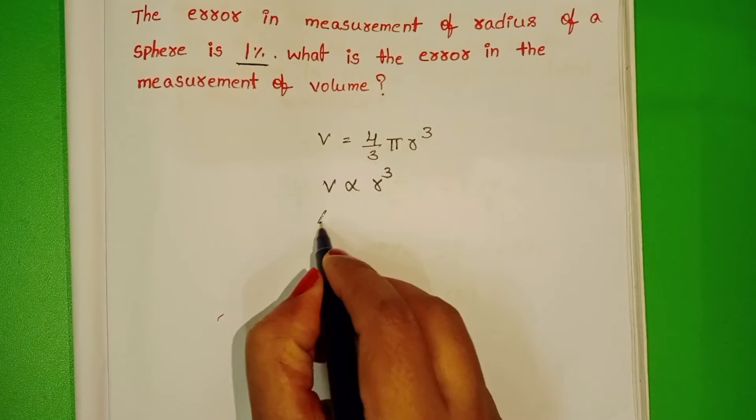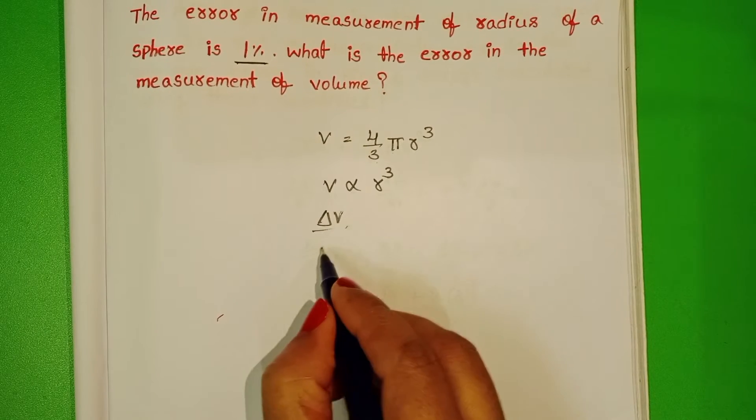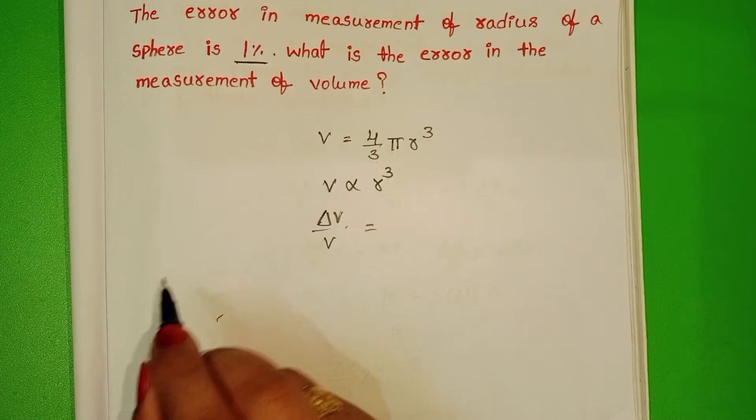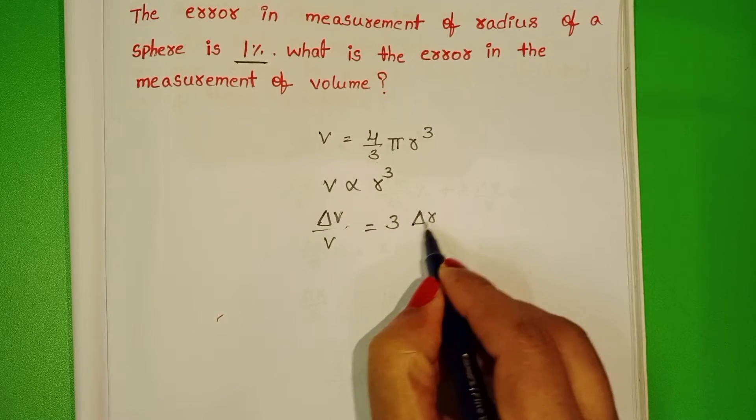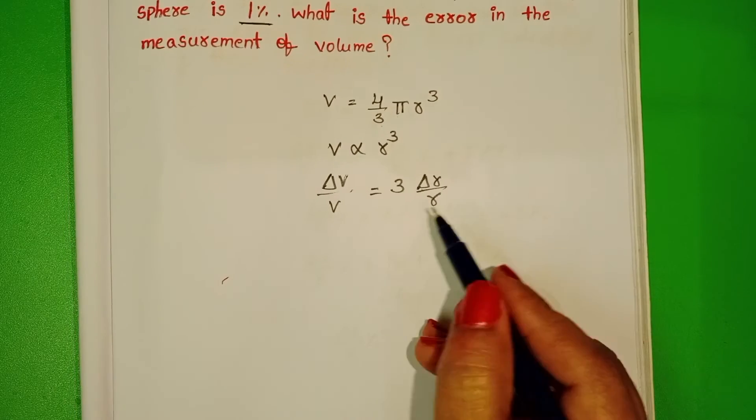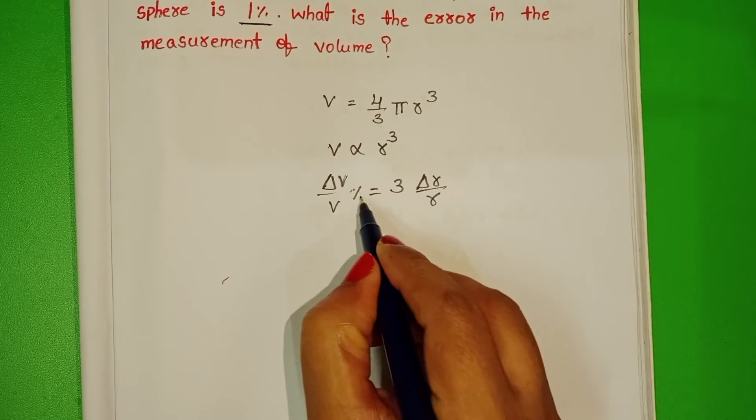For error analysis, the change in volume by initial volume equals 3 times the change in radius by initial radius. ΔV/V = 3 × Δr/r. We'll also take this in percentage.